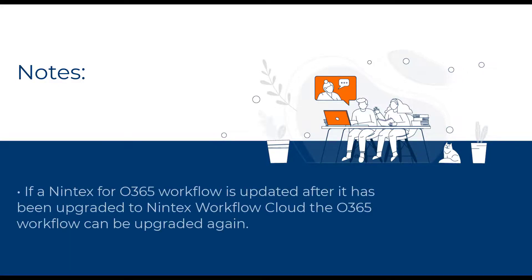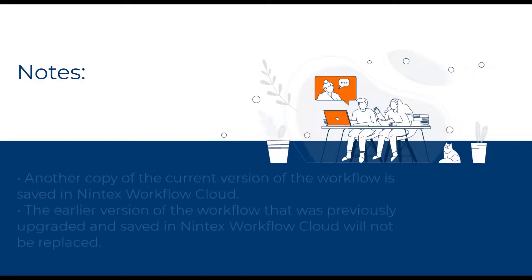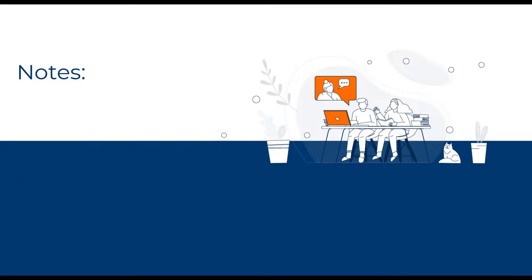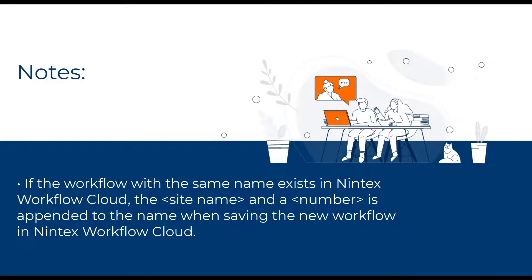If a Nintex for Office 365 workflow is updated after it has been upgraded to Nintex Workflow Cloud, you can upgrade the workflow again to have the latest version saved in Nintex Workflow Cloud. Another copy of the current version of the workflow is saved, and the earlier version that was previously upgraded will not be replaced. If a workflow with the same name exists in Nintex Workflow Cloud, the site name and a number is appended to the name when saving the new workflow.